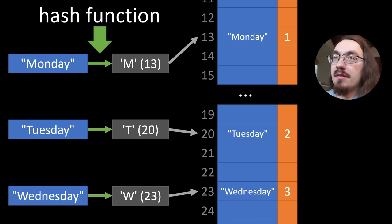So we call this taking the first character the hash function. This is one potential hash function, it's not necessarily a good one, we'll discuss better ones later, but this is the essence of a hash table.